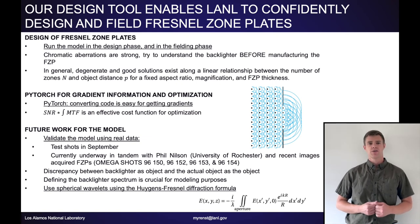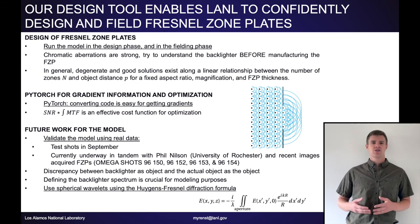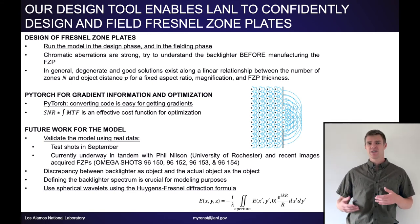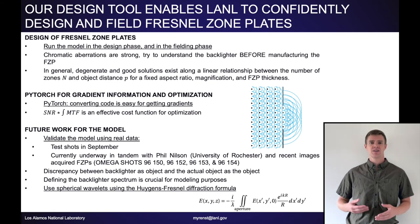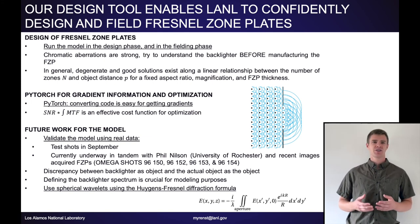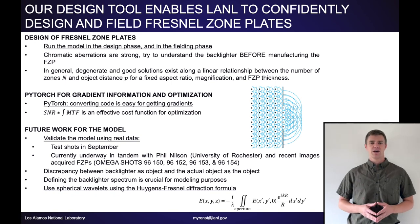We've learned a large number of things so far in this project and also see areas in which we can improve. We developed a design tool that provides valuable information to designers during the design phase of the FZP, and also during shot day by visualizing the alignment tolerances. We employed a unique optimization method through PyTorch, which is relatively easy to convert code into and in return provides automatic and cheap gradient information. Finally, we intend to validate our model by acquiring real data during shots planned in September, as well as by analyzing previous data from collaborators at the University of Rochester. We also intend to expand our blur calculation modeling using full spherical wavelets with the Huygens-Fresnel diffraction formula to see if that gives a better description of blur than ray trace methods. Thank you for listening, please feel free to ask any questions.